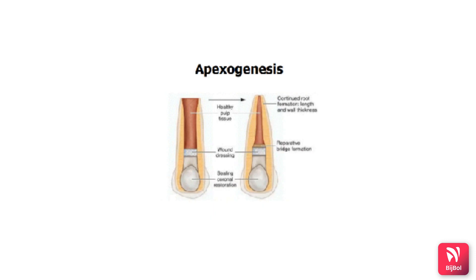In immature teeth, apexogenesis is preferred because normal root development will not occur unless the pulp remains alive. The pulp produces dentin, and if the pulp dies before apex closure, root wall development will be permanently arrested.